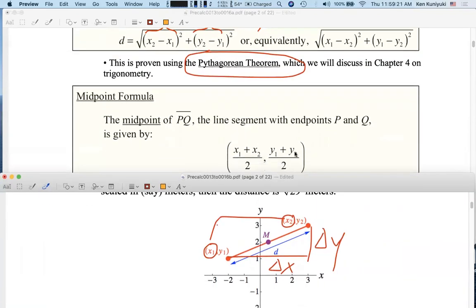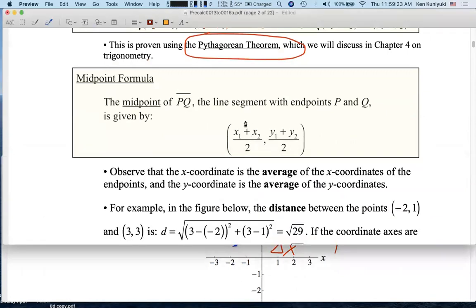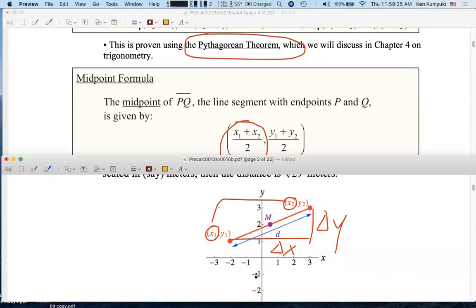So the x-coordinate of the midpoint is (x₁ + x₂)/2. That's how you take the average of two real numbers.